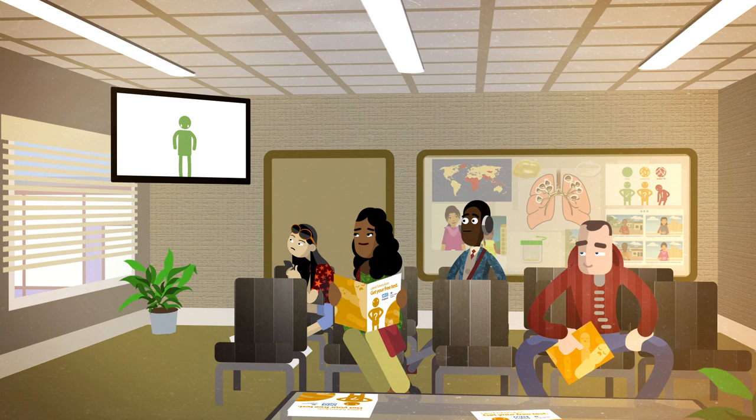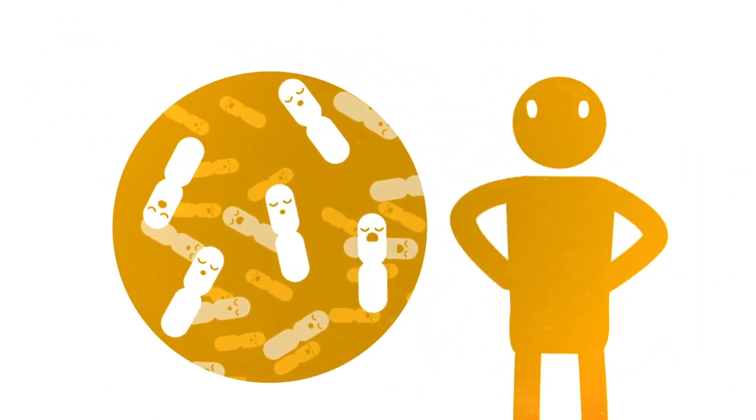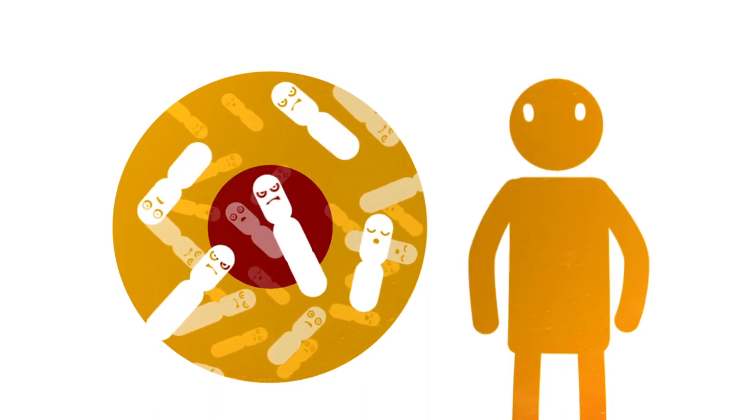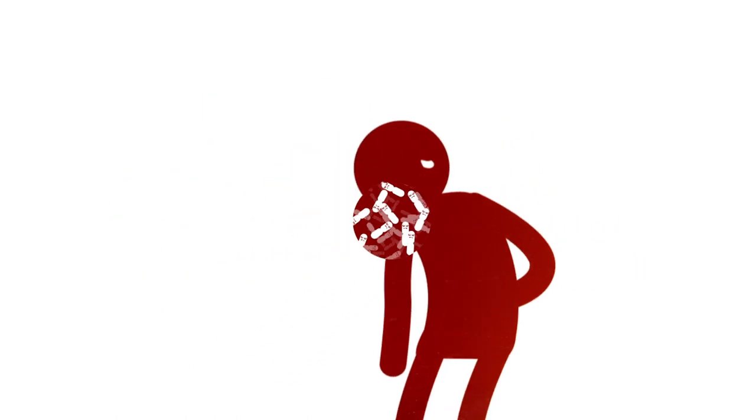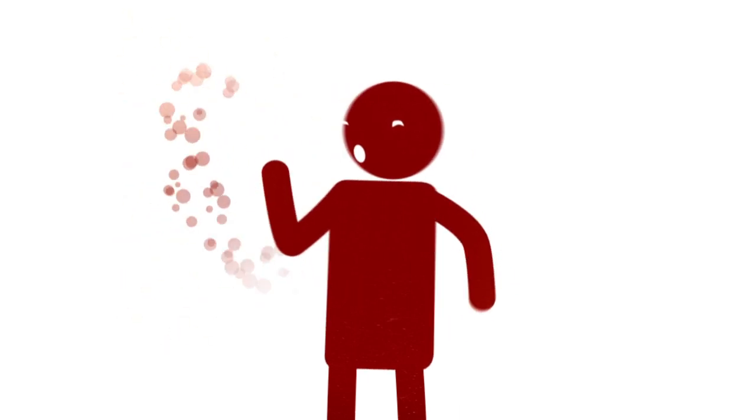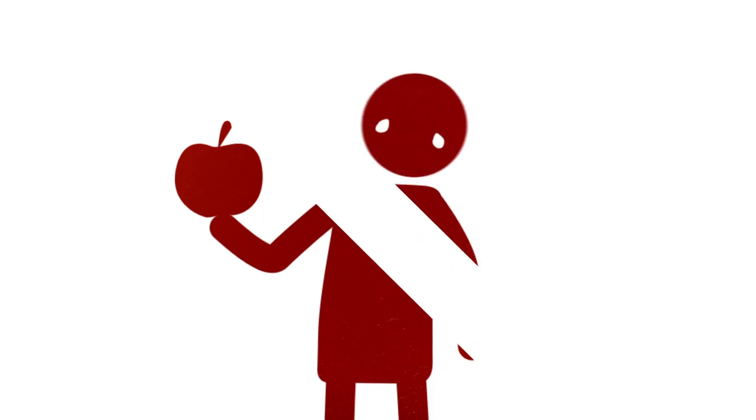When you have latent TB bacteria asleep in your body, you won't feel unwell. If the TB bacteria wake up and become active, you would start to feel unwell. People with active TB will have symptoms. These can include coughing, fever and sweating at night so much that you have to change the sheet. They also include sudden weight loss for reasons you can't explain, loss of appetite and tiredness.